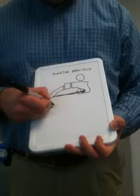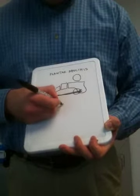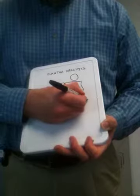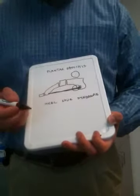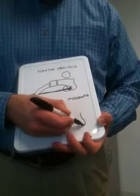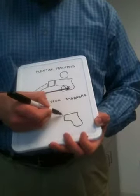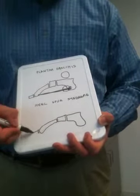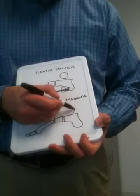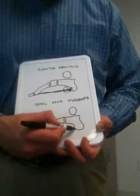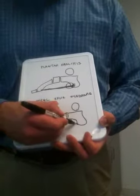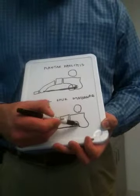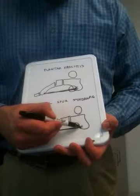Next, we have a condition called Heel Spur Syndrome. These two are very similar. Again, if we draw the heel and the bones of the midfoot, the first metatarsal bone, and the toe — we have the plantar fascia that inserts on the heel and extends to the ball of the foot. Again, you can think of this plantar fascia as being well adhered and superglued to the heel bone.